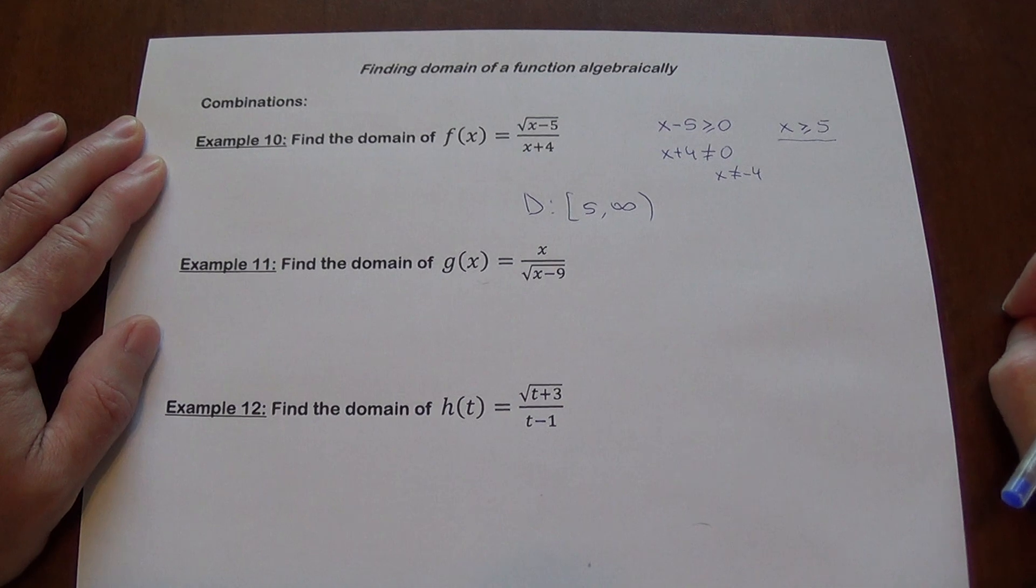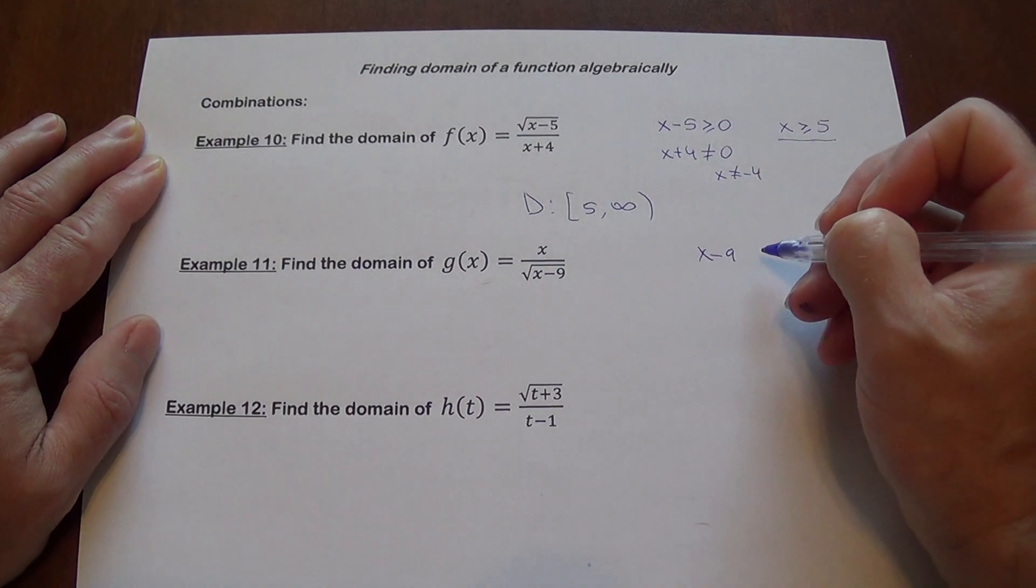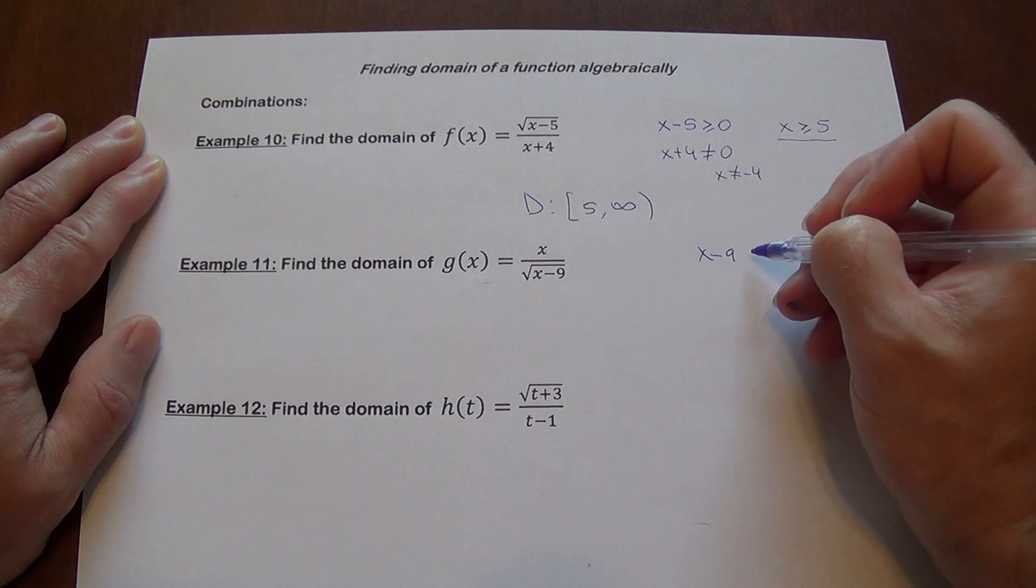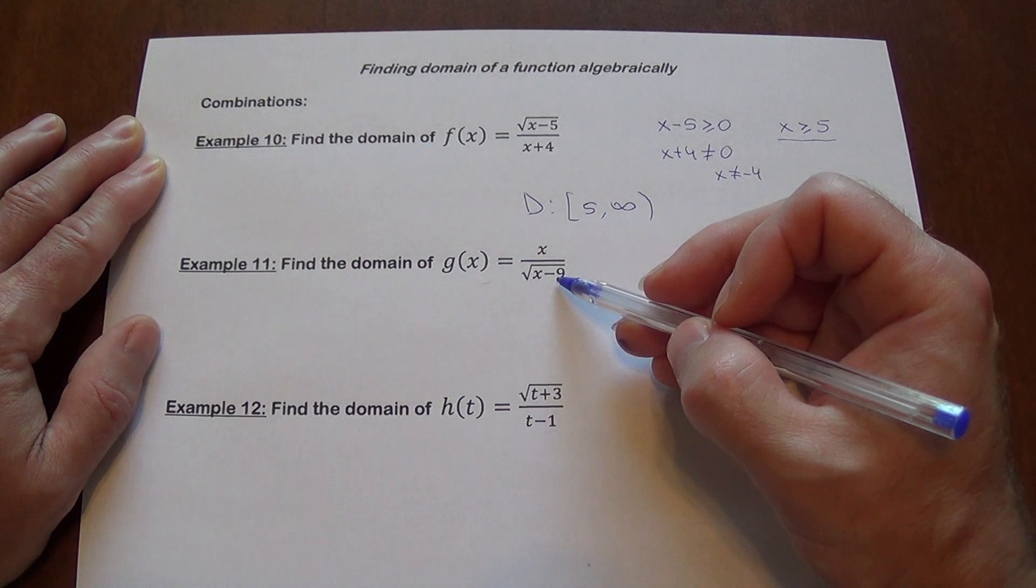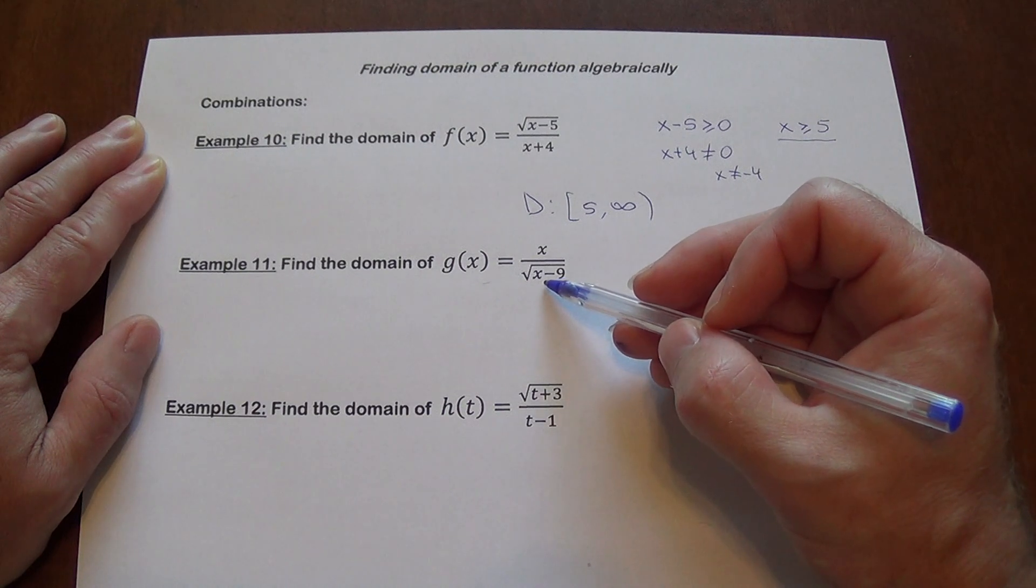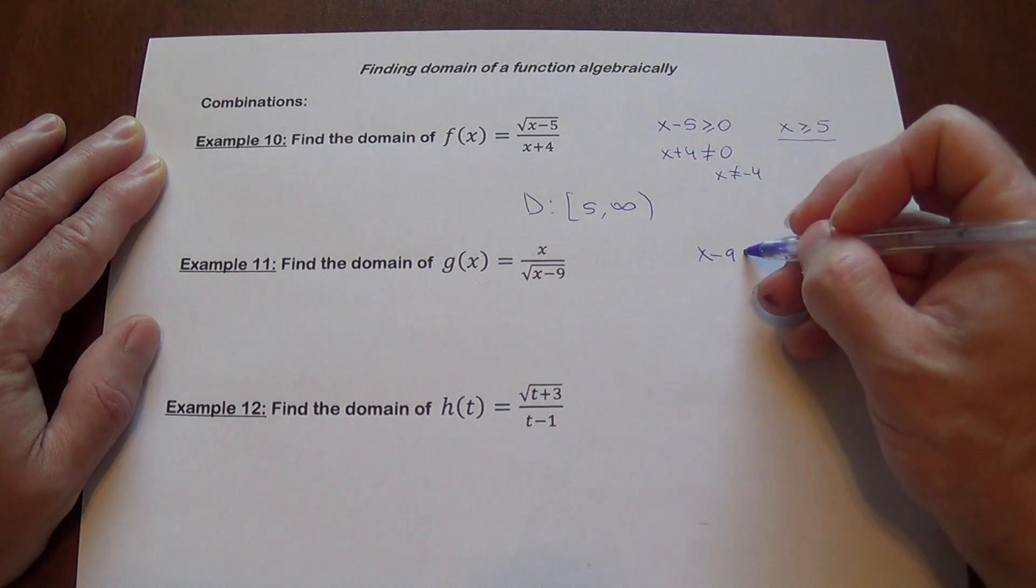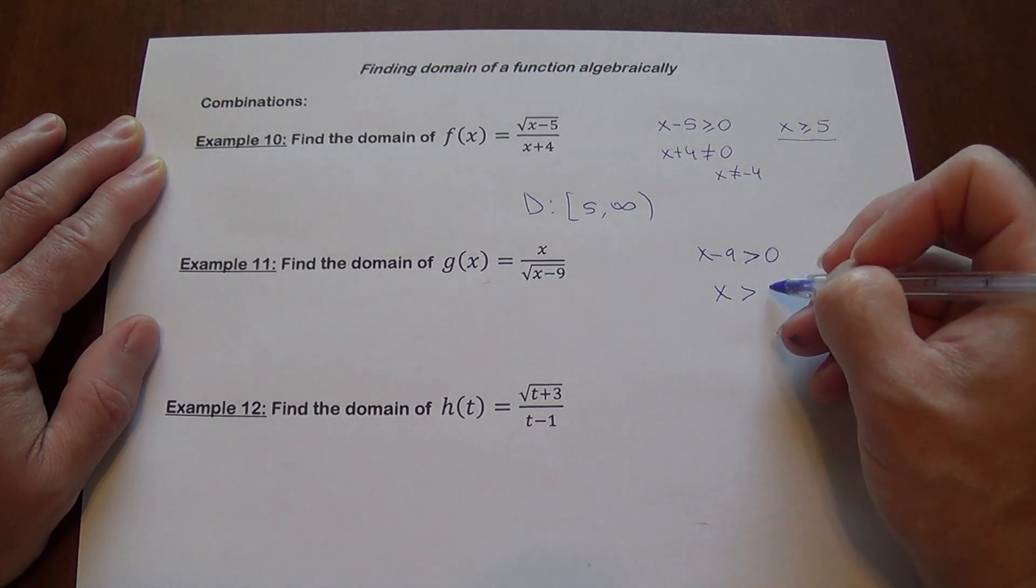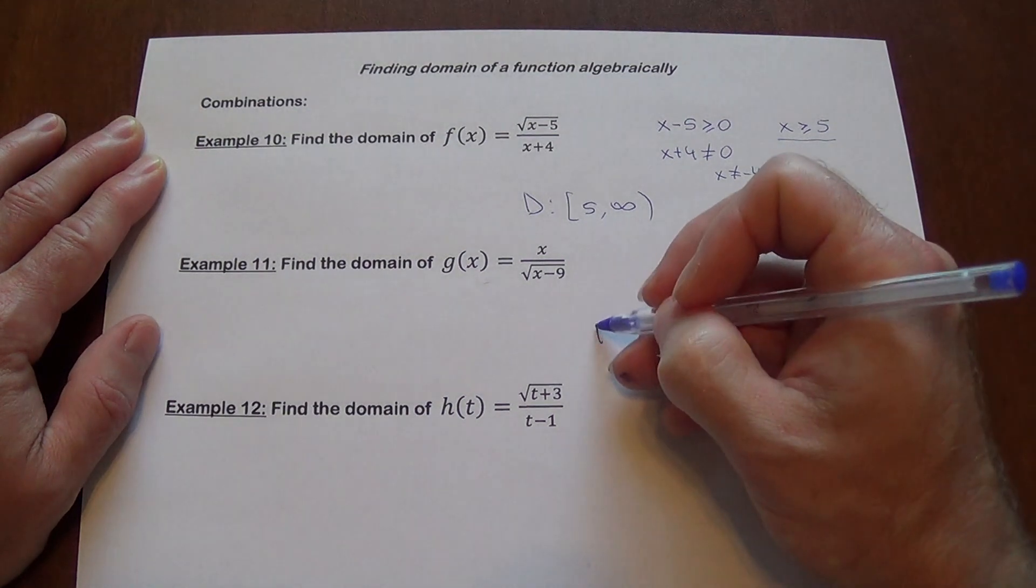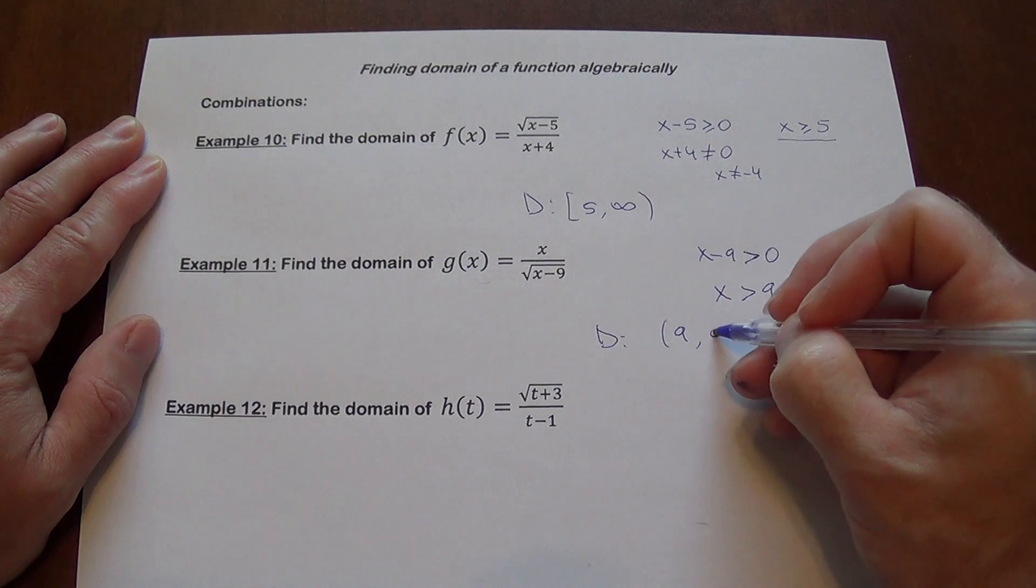What about 11? So 11 has a square root. We want x minus 9 greater than, well, it cannot equal 0 because if this was not on the bottom, it would be OK for x minus 9 to equal 0, but because it's on the bottom, we cannot divide by 0, so x minus 9 has to be strictly positive, which means x is greater than 9. And the domain here is going to be 9 open to infinity.